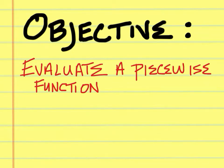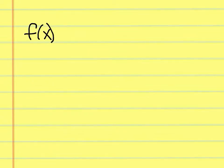Today's objective is to evaluate a piecewise function. A piecewise function has some parameters set up to it. For example, f of x equals something, and here are the conditions for it.